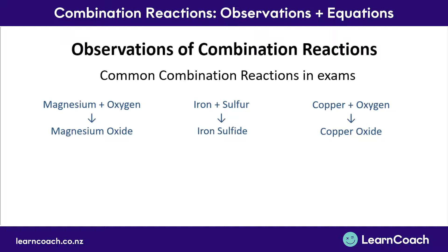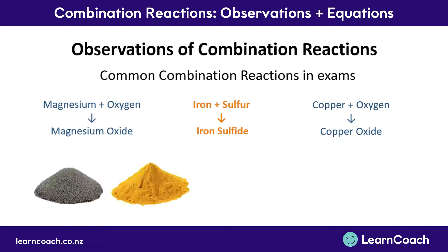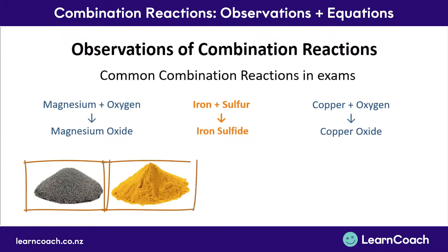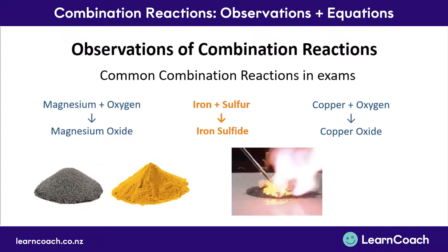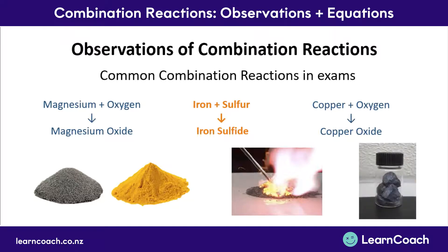Iron sulphide is the combination of iron and sulphur, usually in powder form. Iron powder is a dark grey powder, and sulphur comes as a bright yellow powder. When you add heat to the mixture, they glow brightly, and the product formed is iron sulphide — a dark grey solid.